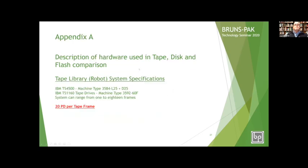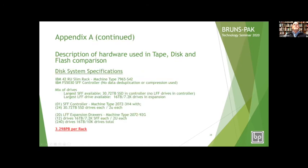This is the appendix for those who want to drill into the details. This is the description of the hardware used in the comparison — the tape library facts, figures, and model types. You can see it's 20 petabytes per frame. This is derived from actual configurations put through IBM's configuration tools.